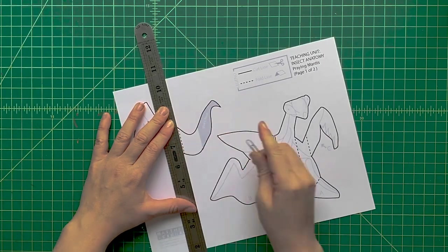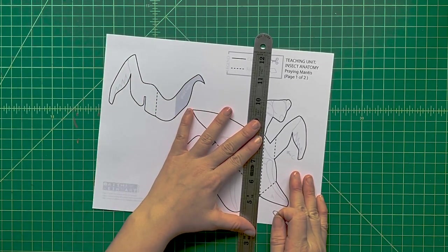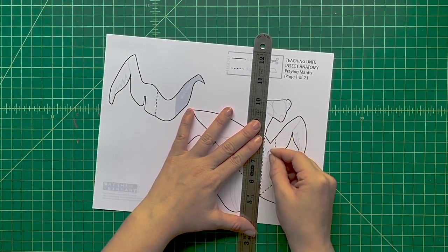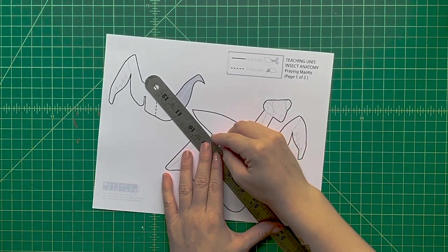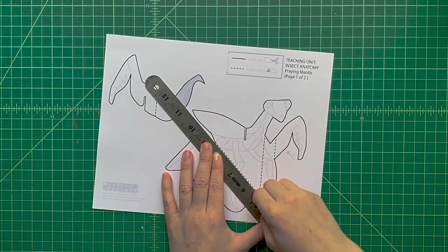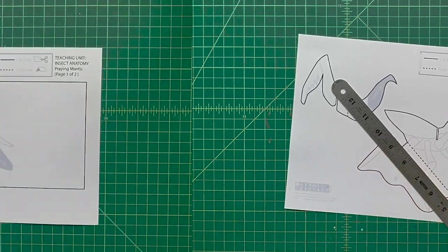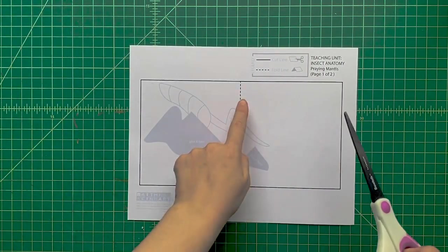We're going to do that for every dotted line we see on all the pop-up pieces. Take your ruler, lay it against the dotted line, and press with the paper clip. We'll score all those dotted lines.